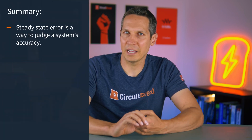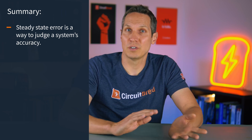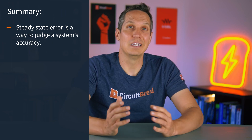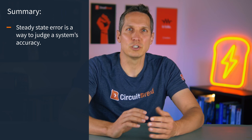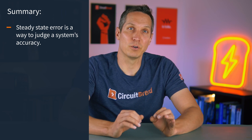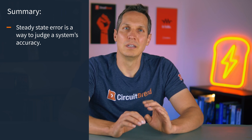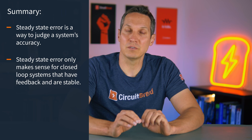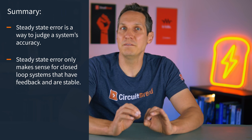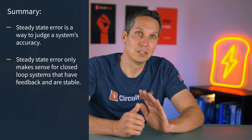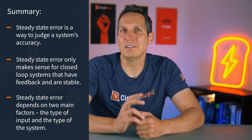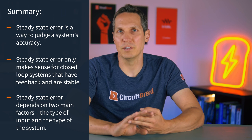This is important because both the type of system and the input type will affect the steady state error. To summarize a few points: first, the steady state error is a way to judge a system's accuracy — ideally the system should match the reference input at steady state, and steady state error should be as low as possible, making it one of the measures of performance. Second, steady state error only makes sense for closed loop systems that have feedback and are stable. Third, steady state error depends on two main factors: the type of input and the type of the system.